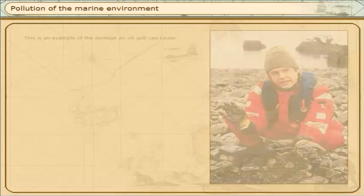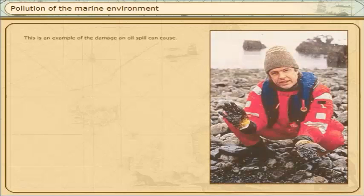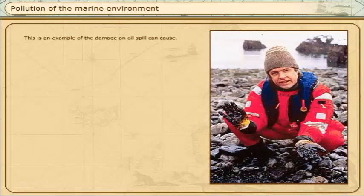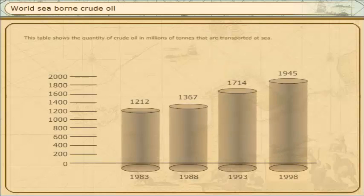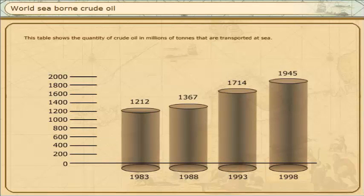This is an example of the damage an oil spill can cause. This table shows the quantity of crude oil in millions of tonnes that are transported at sea. This quantity increases each year.